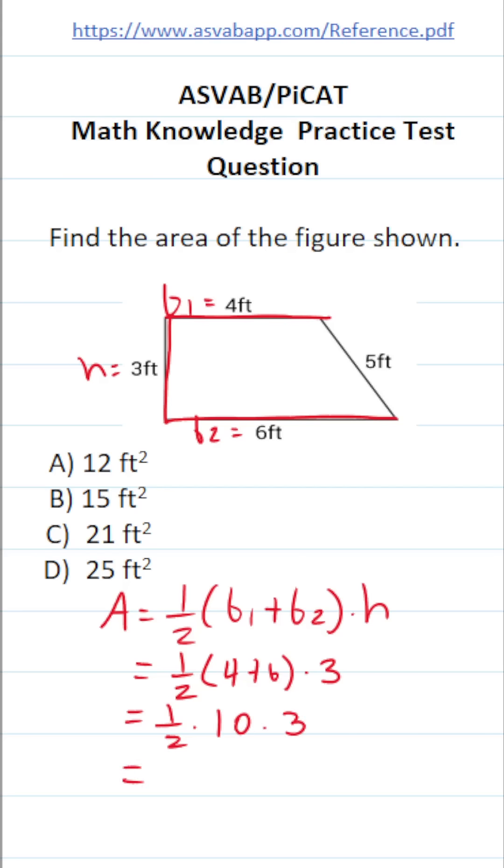This is one half times 4 plus 6 is 10 times 3. And it doesn't matter the order in which you do this. One half of 10 is 5, so this is 5 times 3, which is 15.